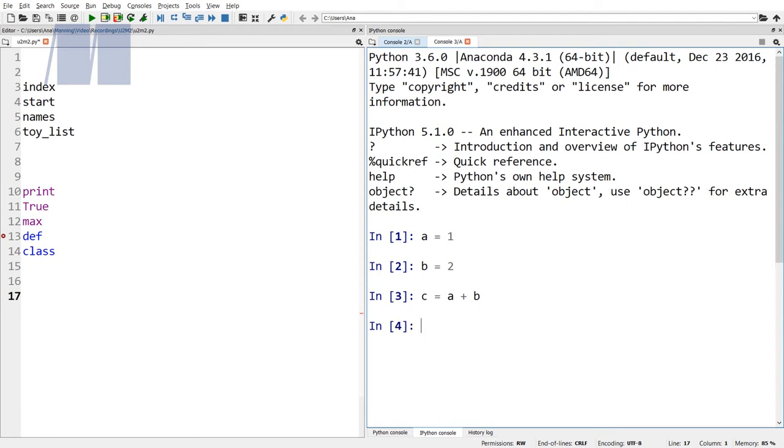These three lines initialize three variables, a, b, and c. You can see the values of each one of these variables by just typing the variable name and hitting enter. So if I just type in a and hit enter, the result will be 1. So this tells me that the value of a is equal to 1.